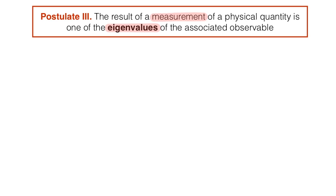To start, we need to remember that an operator A is a mathematical object that acts on a state phi and delivers another state phi prime. Before moving on, if you need a refresher about operators, check the video in the description.